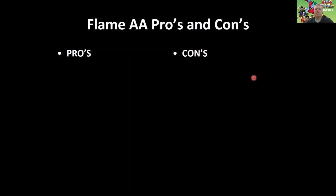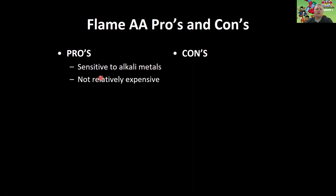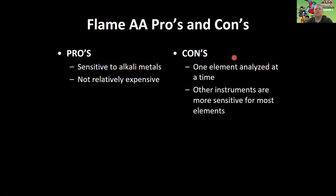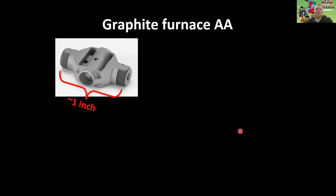Flame atomic absorption has some pros and cons. Pros: it's really sensitive to alkali metals — you can measure at parts per billion or parts per trillion if you're careful — and it's also relatively cheap compared to other techniques. Cons: since you're using a hollow cathode lamp, you can only analyze one element at a time, which is a big drawback, and other instruments are more sensitive for most other elements.